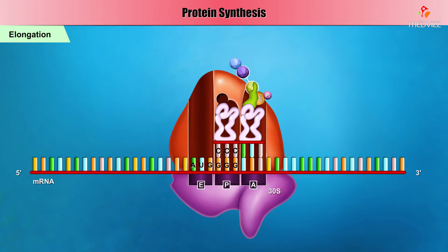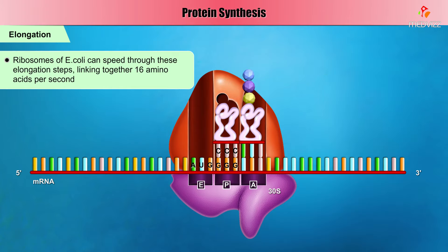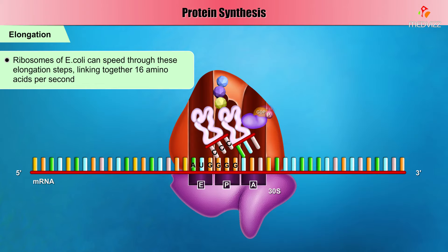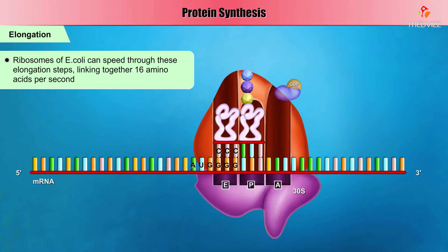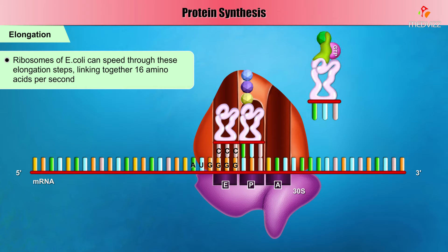These elongation steps repeat along the mRNA. The ribosomes of E. coli can speed through these elongation steps, linking together 16 amino acids per second.